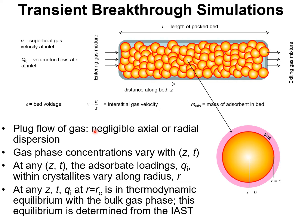In setting up the model for transient breakthroughs, we assume a plug flow of gas assuming negligible axial or radial dispersion. The gas phase concentrations vary with Z and time T, and at any Z, T the adsorbate loadings Q_i, say in units of moles per kilogram, within the crystallites vary along the radius.